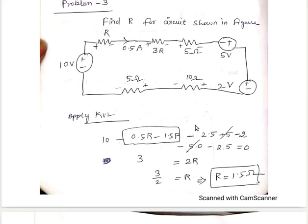Hi, this is the continuation of the last session. We are going to see this problem now: find R for the circuit shown in the figure. This is the circuit which is given to you. You have to find the R. One R is here, one R is here also. You have to find the value of R in this circuit.